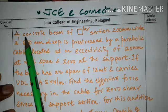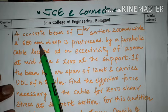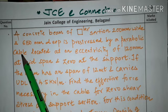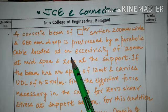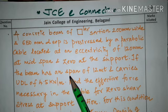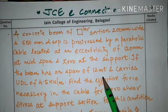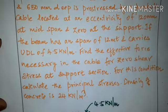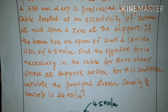I will read the problem here. A concrete beam of rectangular section 200 mm wide and 650 mm deep is pre-stressed by a parabolic cable. The cable profile is parabolic, located at an eccentricity of 120 mm at mid span and 0 at support. If the beam has a span of 12 meters and carries a UDL of 4.5 kN per meter, find the effective force necessary in the cable for 0 shear stress at the support section, and calculate the principal stresses. The density of concrete is 24 kN per meter cube.